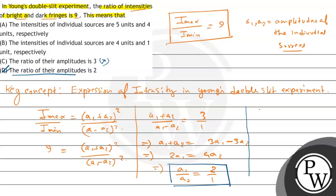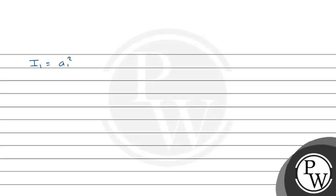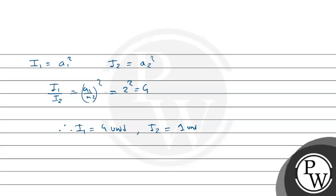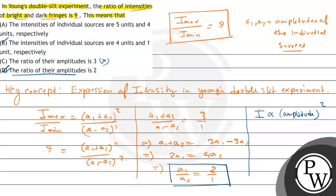Now we know that intensity i is proportional to amplitude squared. Going to the next page: i1, the intensity of the first source, equals a1 squared, where a1 is the amplitude of the first source. And i2 equals a2 squared. So i1 by i2 equals (a1 by a2) whole squared, which equals 2 squared equals 4. So i1 equals 4 units and i2 equals 1 unit. Therefore option B is correct — the intensities of individual sources are 4 units and 1 unit respectively.